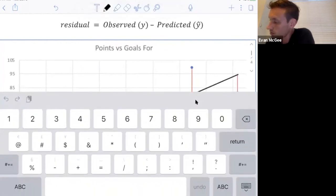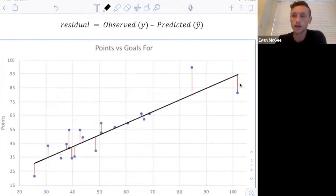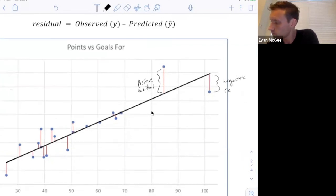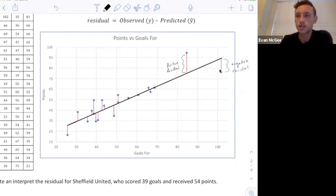You can see Liverpool did better than expected, because they have a positive residual. All of these red lines that you see are the residuals for these points. You can see there are some teams that performed exactly as expected, because they're on the line. This is an example of a positive residual. This is an example of a negative residual. It's negative because their actual number of points was lower than predicted, based on the number of goals that they scored.